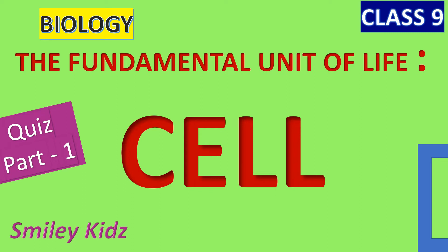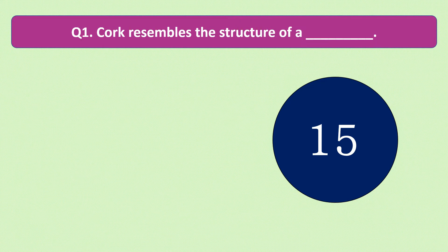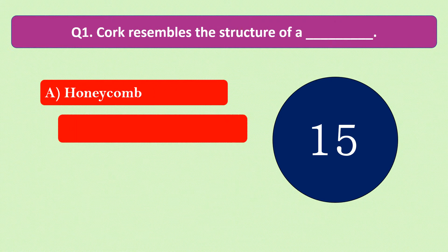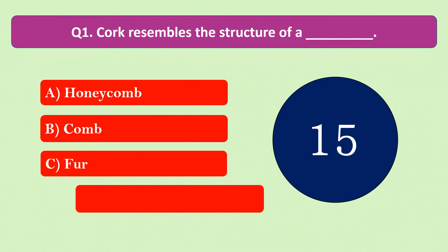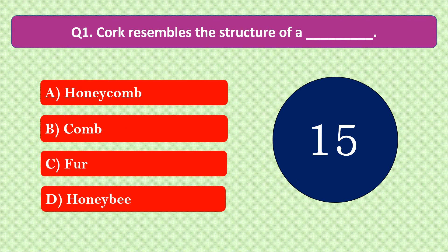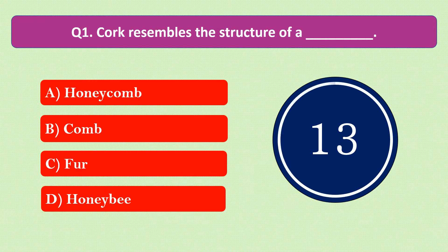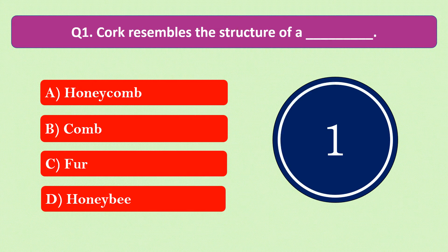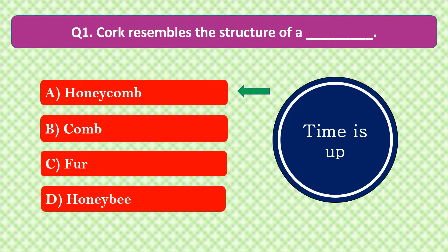Question number 1: Cork resembles the structure of a dash. The options are A. Honeycomb, B. Comb, C. Fur, or D. Honeybee. Your time starts now. Your time is up and the right answer is option A: Honeycomb. Cork resembles the structure of a honeycomb.